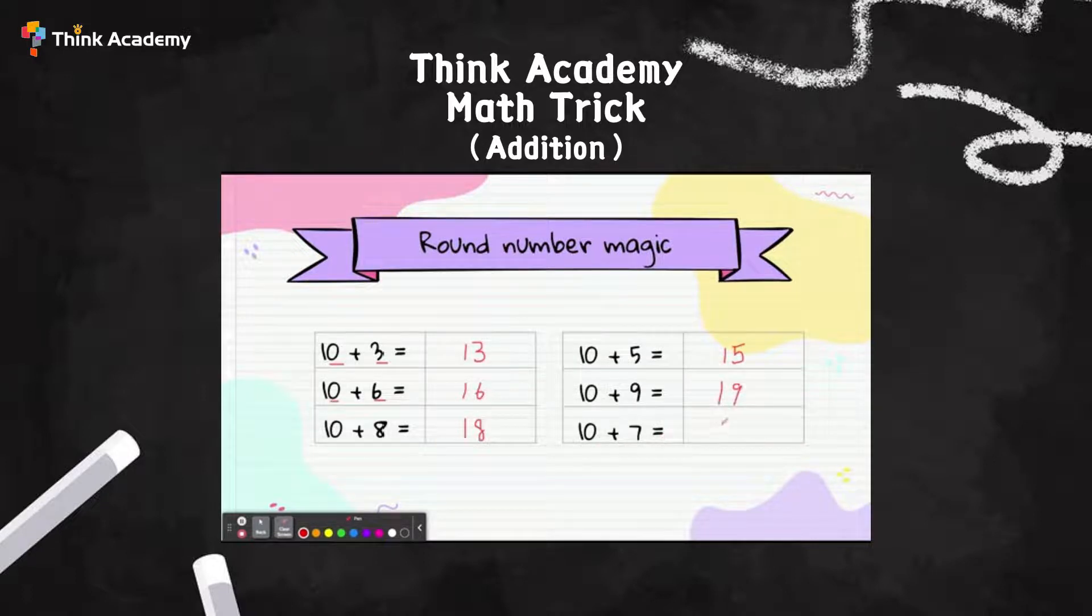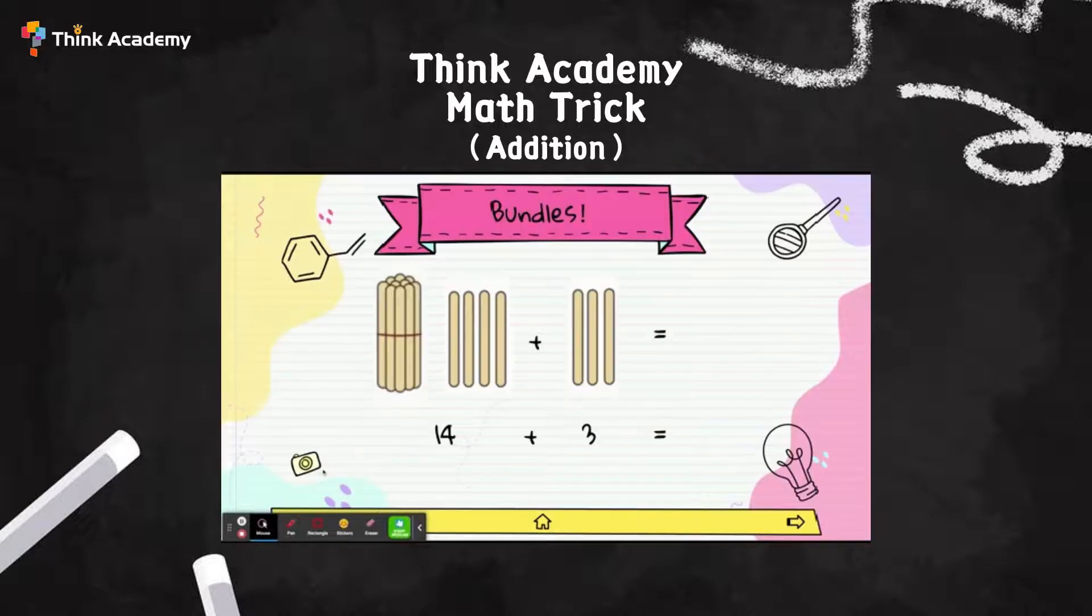10+7 equals 17, just change the 7. Very great work! Now let's try some bundle magic method. Bundle means I have a 10 bundles here, the nice round number 10 bundles.